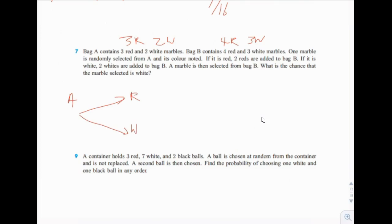From bag A, we're going to get either a red marble or a white marble. The chance of getting a red marble from bag A is three out of five, because there are five marbles total. White is going to be two out of five. If it is red, two reds are added to bag B. If it is white, two whites are added to bag B — which affects the probabilities for bag B.